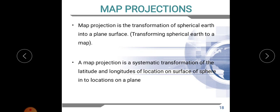As we discussed in the last class, on the earth there are lines known as latitude and longitude. During the map projection process, we are transforming these latitudes and longitudes of locations on the surface of the sphere into locations on a plane — the plane meaning that will be a map.